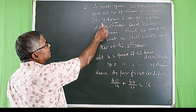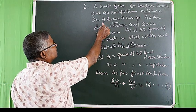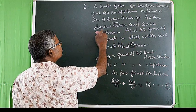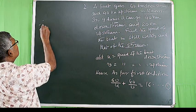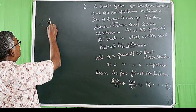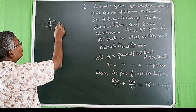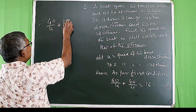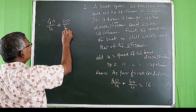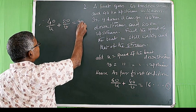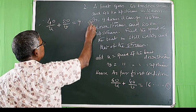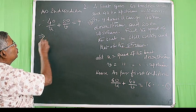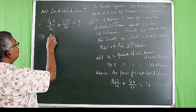In the second condition, in 9 hours it can go 40 km downstream and 20 km upstream. Therefore 40/u + 20/v = 9 hours. Suppose it is equation number 2.